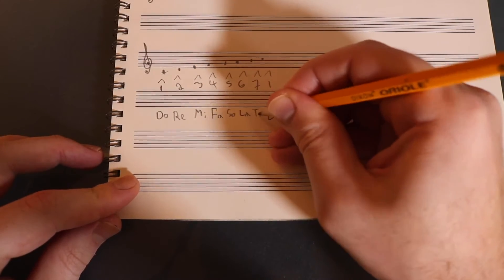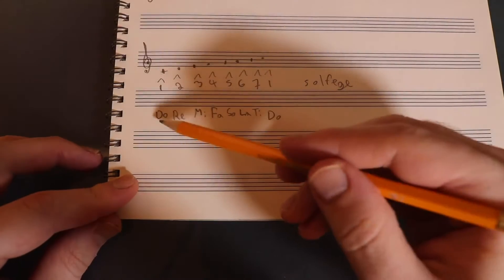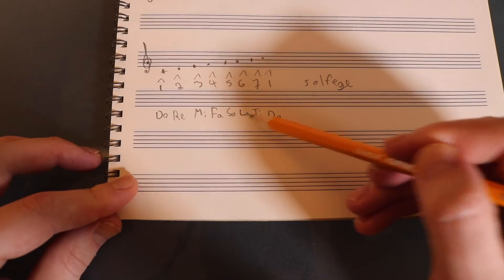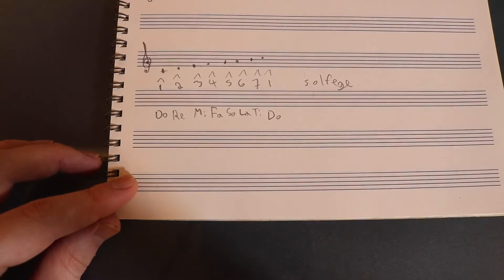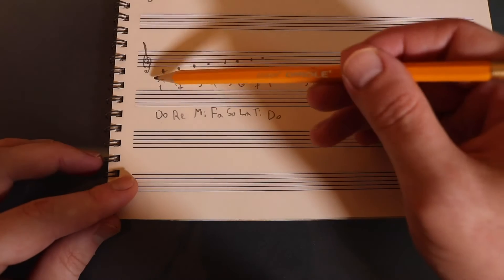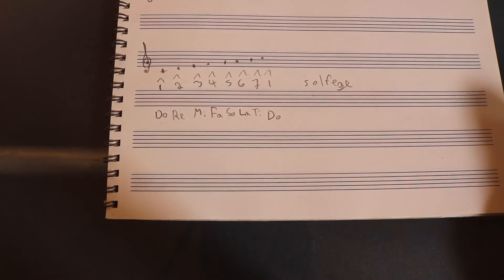La, Ti, Do. Do, Re, Mi, Fa, Sol, La, Ti, Do. That's the really easy way to think about solfege. So we have two pretty simple ways to identify scale degrees so far.